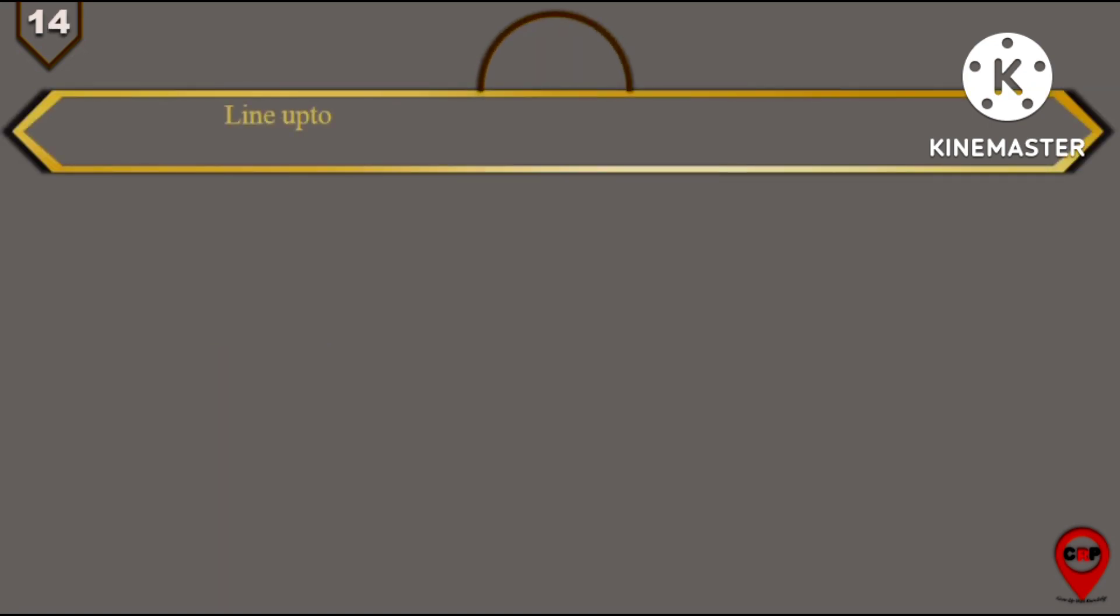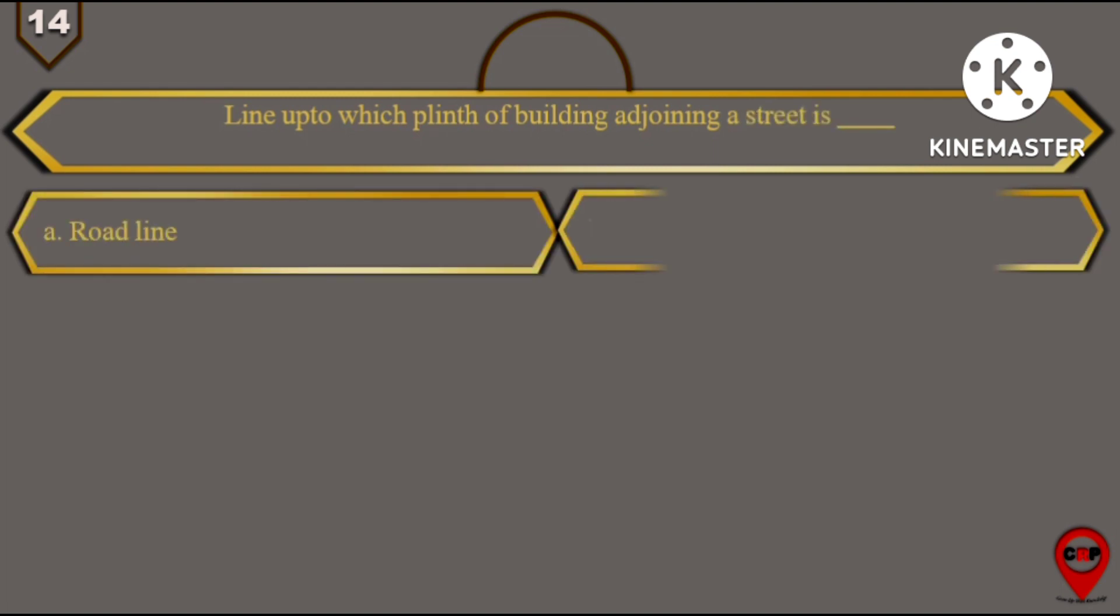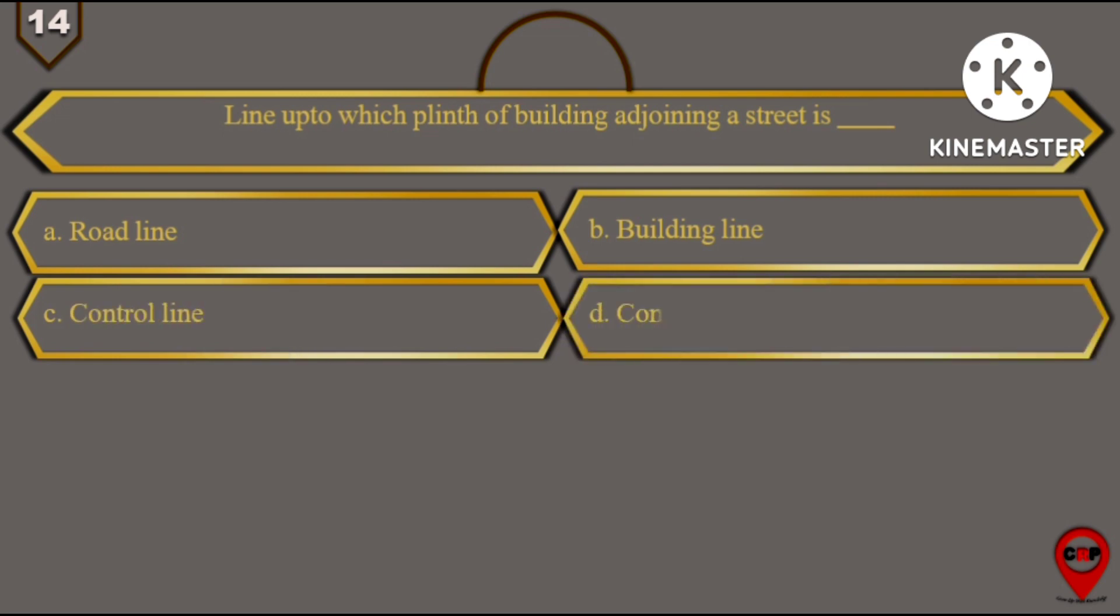Next question, question number 14: Line up to which plinth of building adjoining street is. Options are: A. Road line, B. Building line, C. Control line, and D. Contour line.